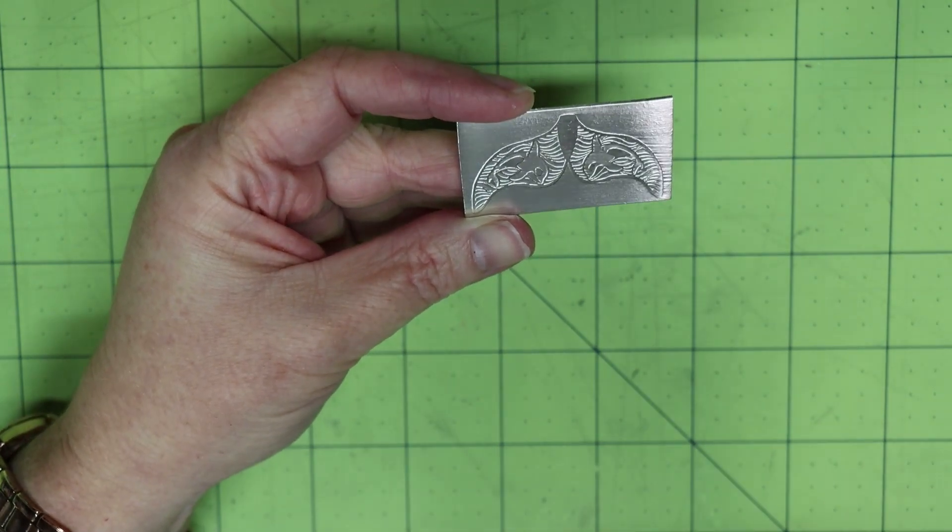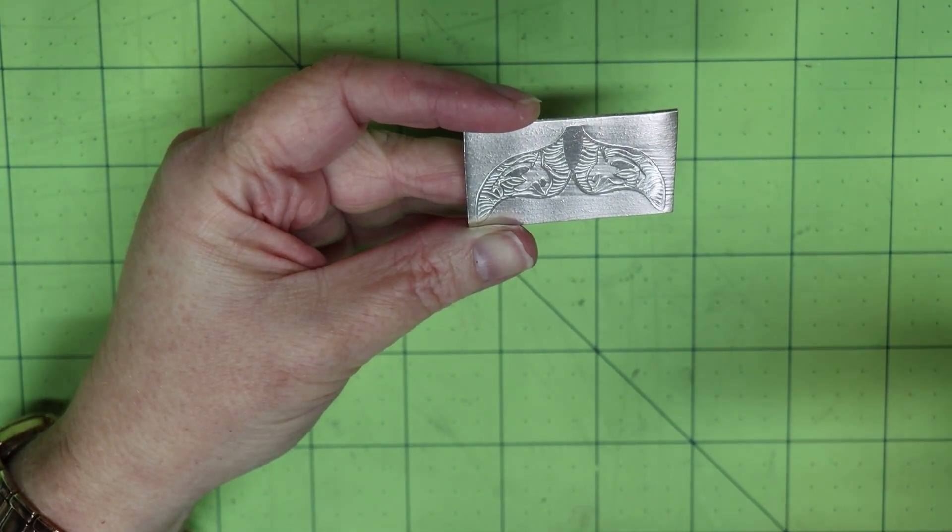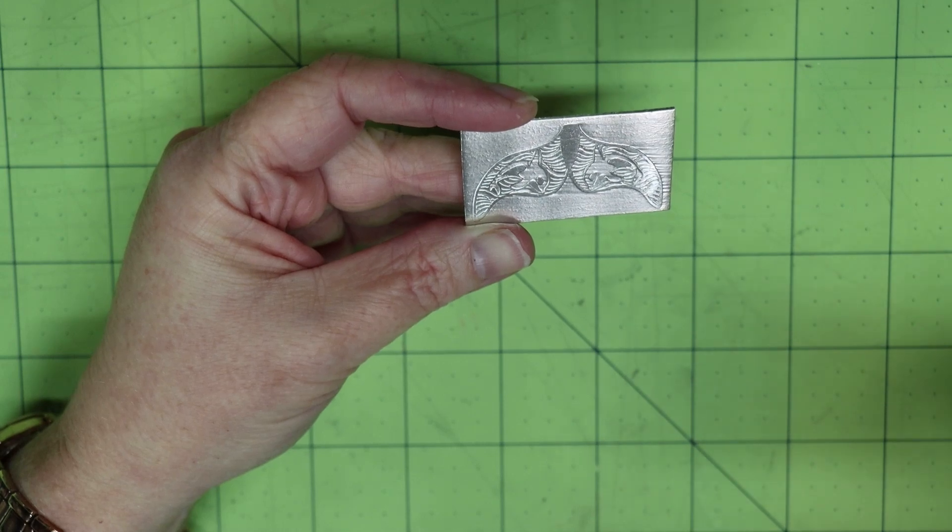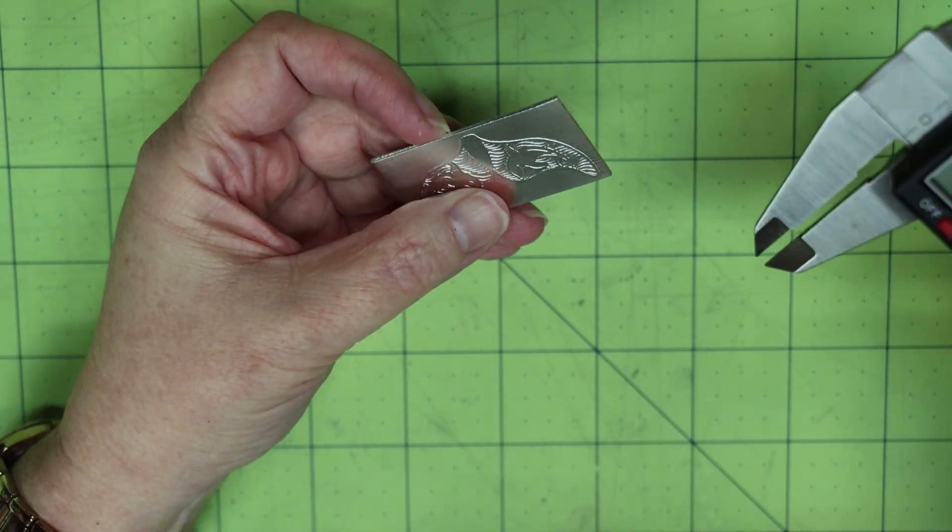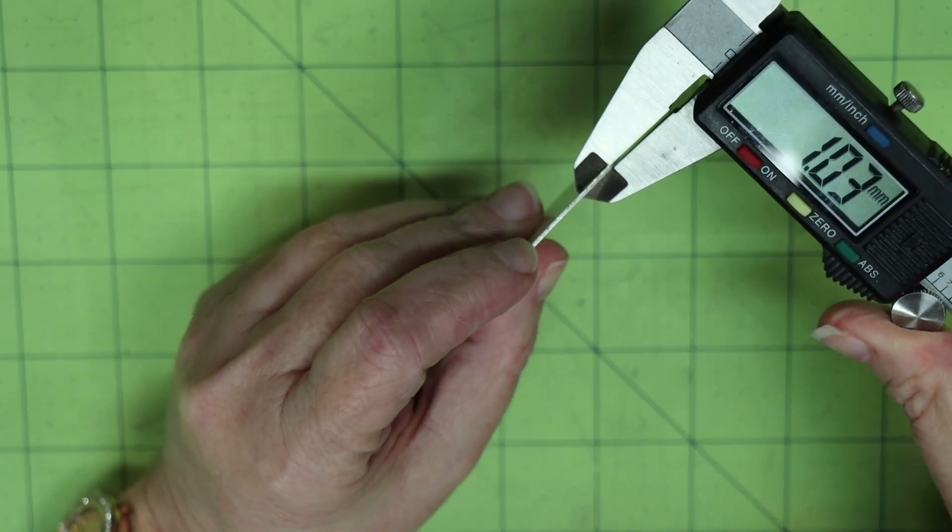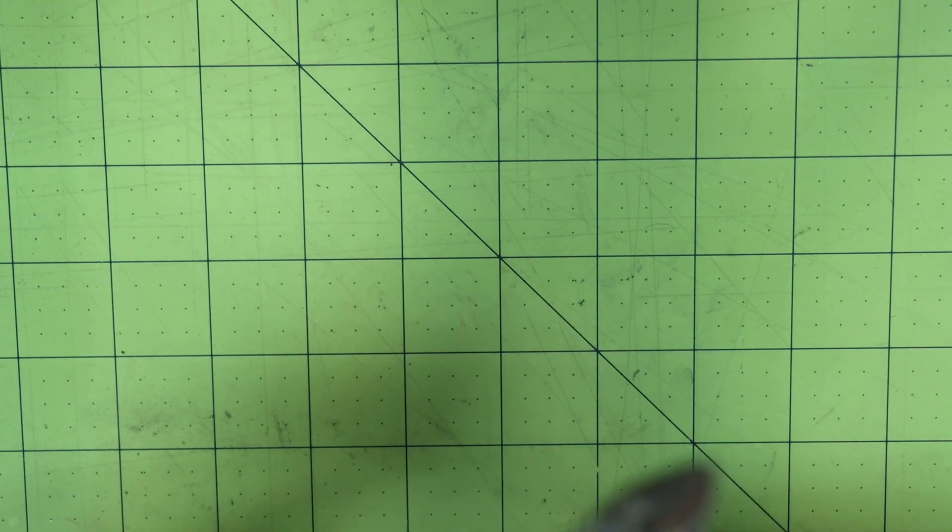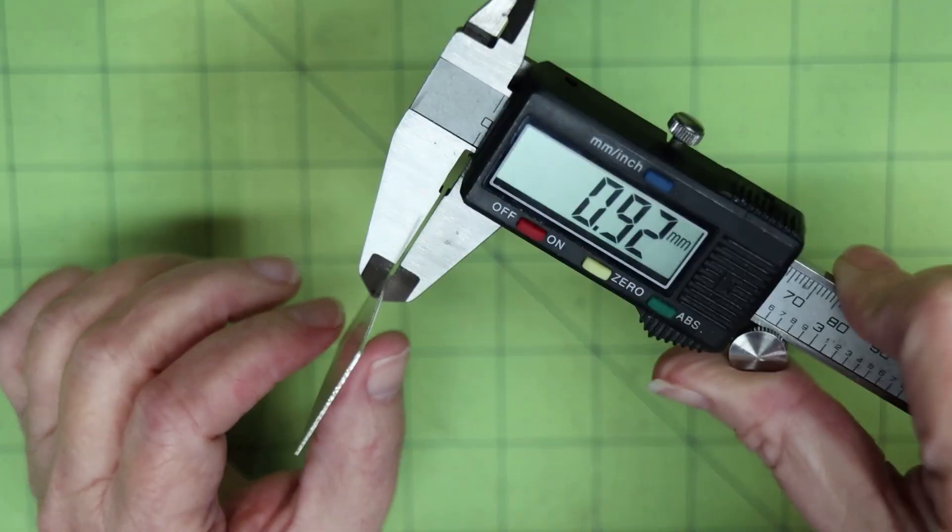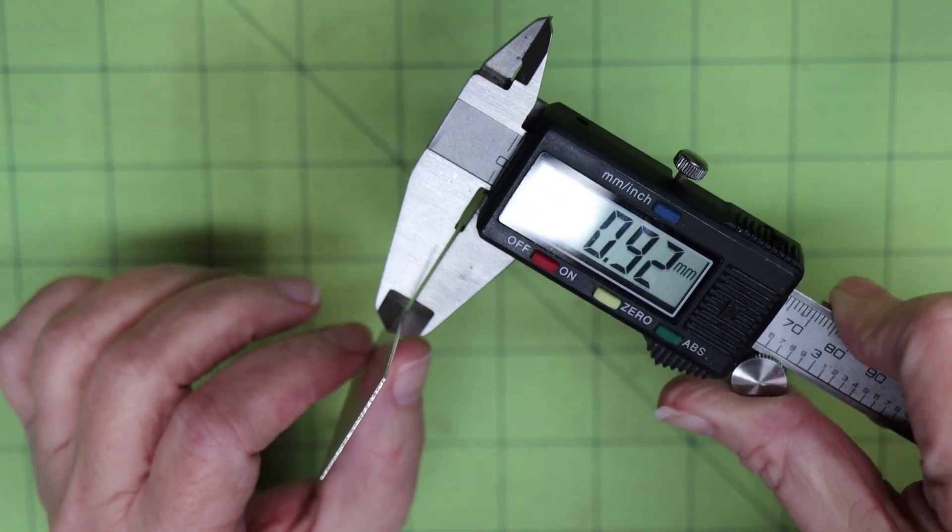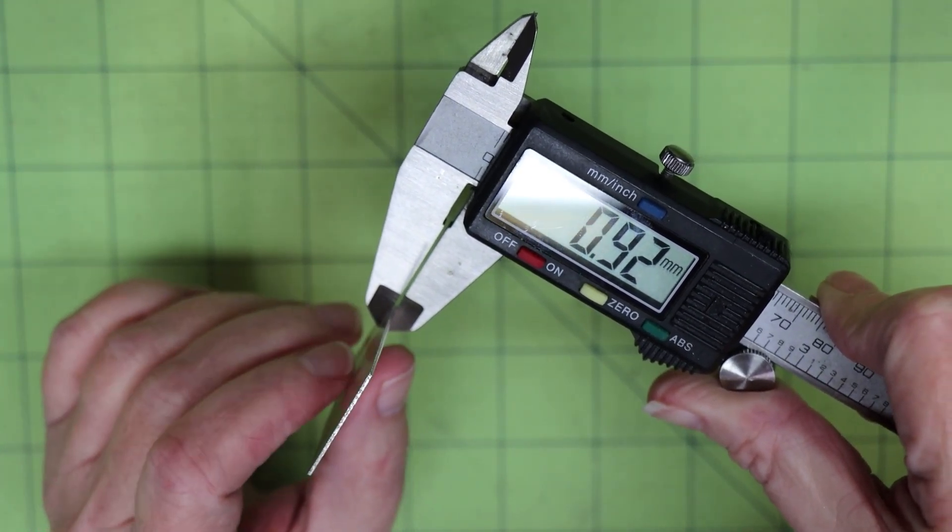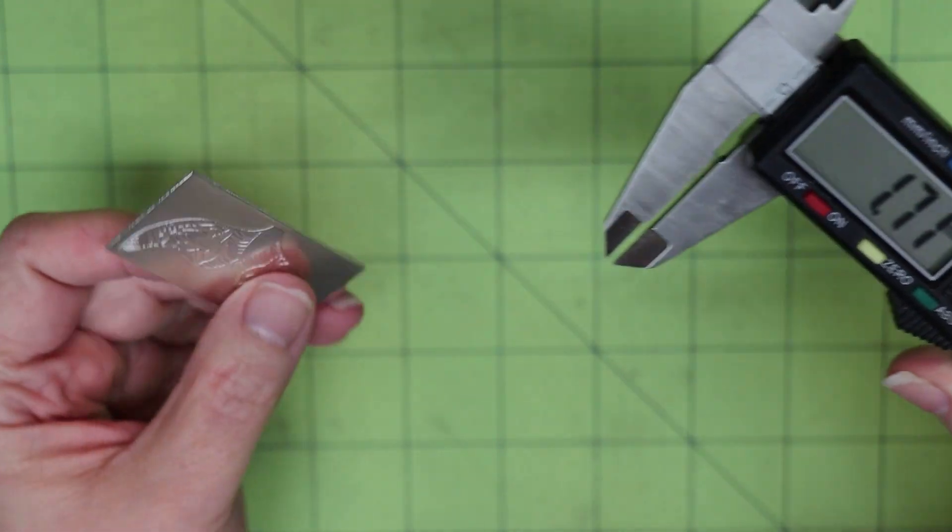And I'm curious to see how thick the piece of metal is now. We started at 1.02 millimeters, and now we're at 0.92 millimeters, so we can see that we definitely did take material away.